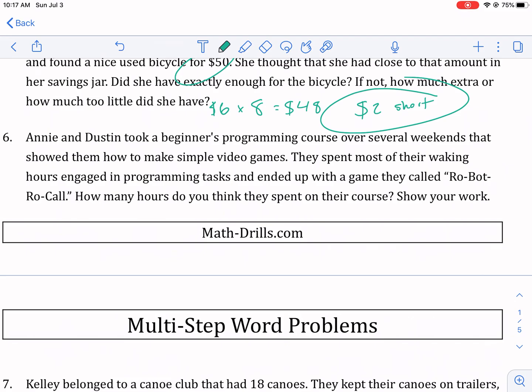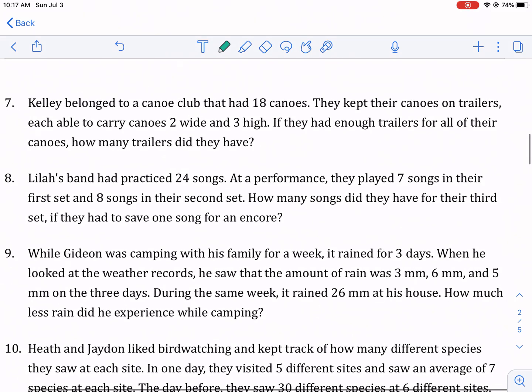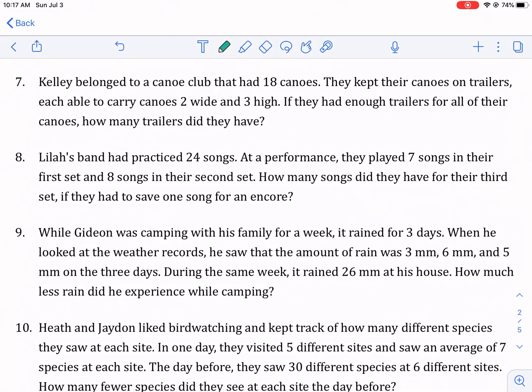Number six is kind of like a non-numerical answer. So we're going to skip that. It's just kind of looking for your work. So we're going to go on to one of the more quantifiable ones, which is number seven. Kelly belonged to a canoe club that had 18 canoes. They kept their canoes on trailers, each able to carry two canoes wide and three high. So if we're looking like a diagram here, here's a canoe, here's a canoe, two wide and three high. So you can stack on one, two, three, one, two, three. That's a very kind of bad looking trailer, but you get the idea. That's my trailer. Two canoes wide, three high. That means there's six canoes per trailer. And there's 18 total canoes. And we want to divide that by six canoes per trailer. That means we're going to need three trailers. I didn't even finish reading the problem. I'm guessing that's what it's going to say. If they had enough trailers for all their canoes, how many? Yes. Three trailers. That's going to be our answer.